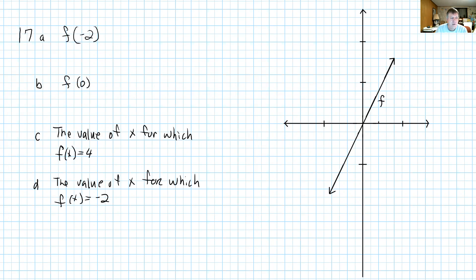Here we have a problem. It says f of negative 2. We have function notation asking us to complete an ordered pair. We're going to look at the graph and find an input or x value that's negative 2 — right here. The corresponding y value to that ordered pair is negative 4. So f of negative 2 equals negative 4.